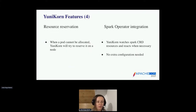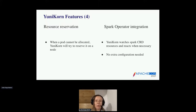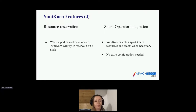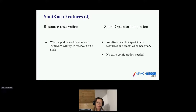Two other main features are resource reservation and Spark operator integration. Yunikorn will support reservation — if a pod cannot be allocated, Yunikorn will try to reserve it to a qualified node, and in the next scheduling cycles it will tentatively allocate it on the reserved node before handling the rest. This is very useful to avoid pods getting starved. The Spark operator integration leverages Yunikorn's application management framework for better integration with the Spark operator. Yunikorn watches the Spark CRD resources and reacts when necessary. It is totally transparent — no extra configuration is needed.